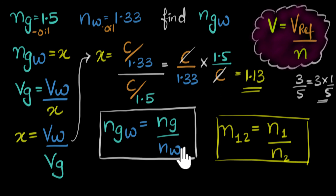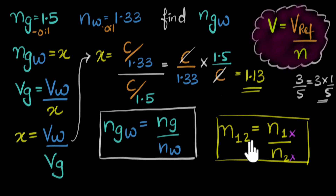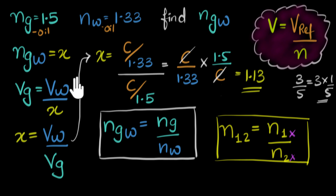In short, if you know the refractive indices of two media with respect to any common medium, then dividing them gives you the refractive index of one medium with respect to the other — this is a generalized result. Problems like this can be solved in one or two steps if you remember this. And if you ever forget, just go back to the definition and derive it from there.